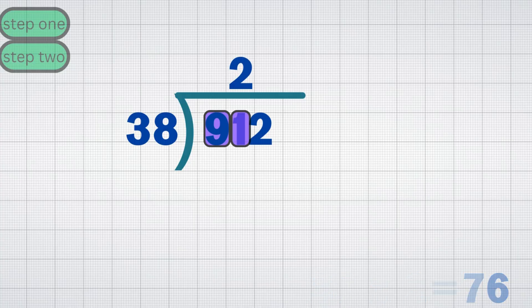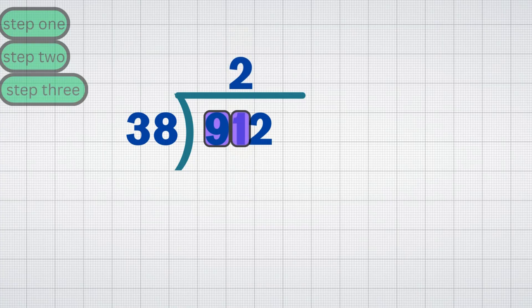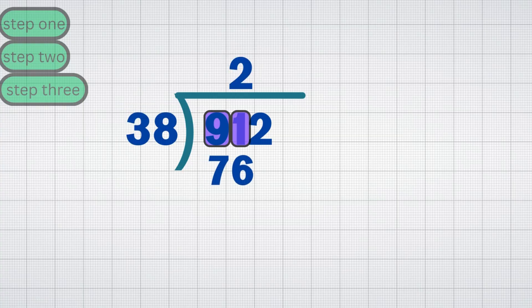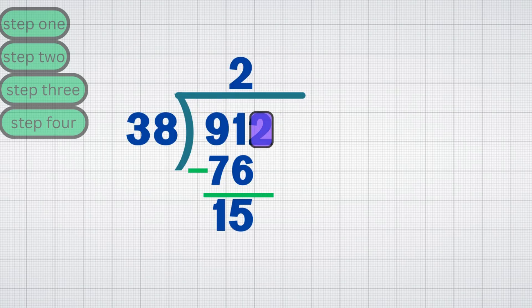Remember, the quotient digit goes above the last digit used. If you skipped a digit, place the quotient above the one you combined. Step 3: Multiply and subtract. Multiply 2 by 38 equals 76. Subtract: 91 minus 76 equals 15. Step 4: Bring down the next digit. Bring down the 2, making the new number 152.